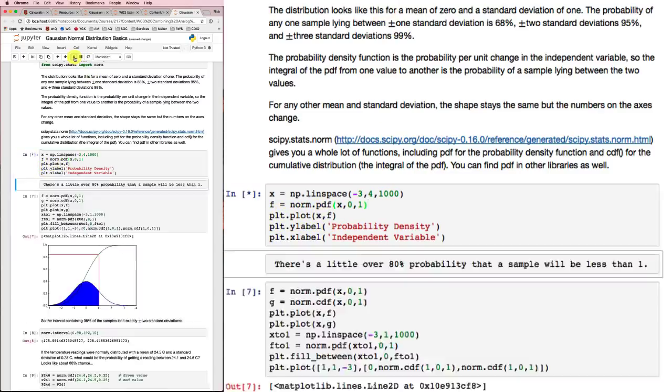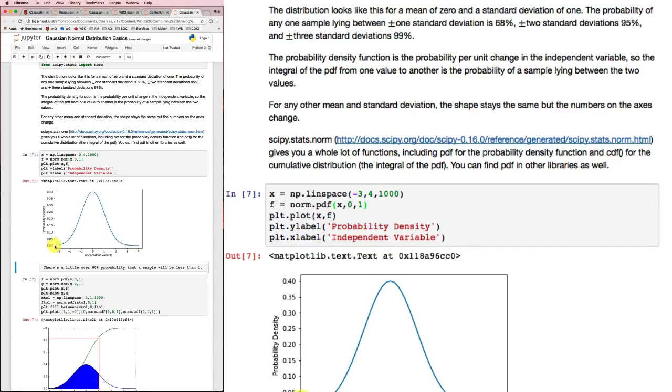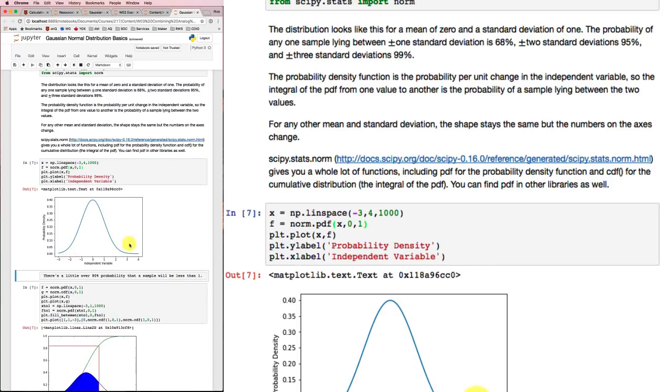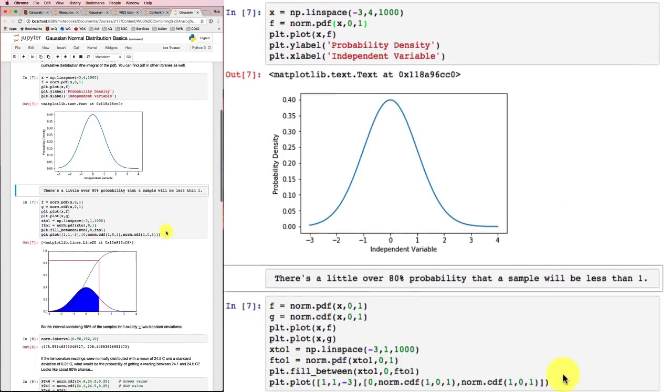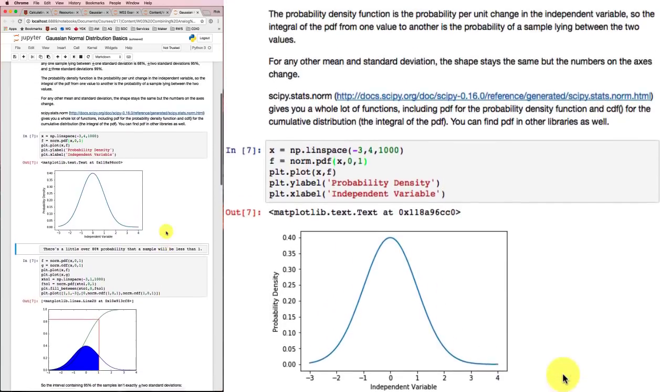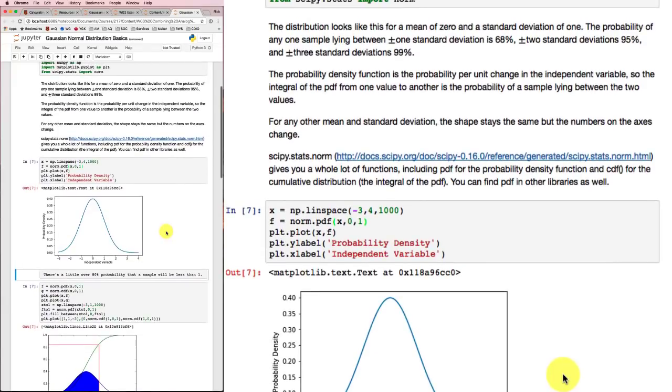So if I run that, this is the plot I get. I get that shape there, and it should be a fairly familiar looking shape. It's a distribution you've seen fairly often.